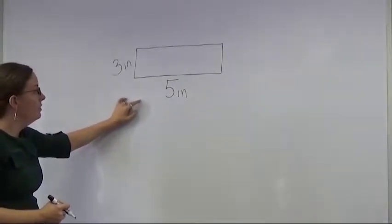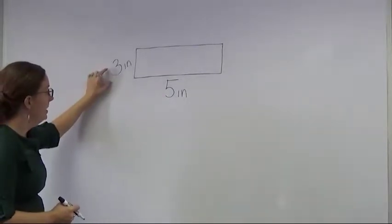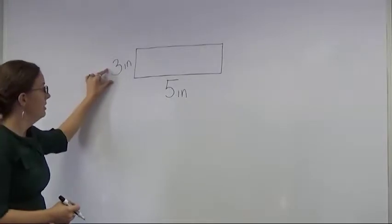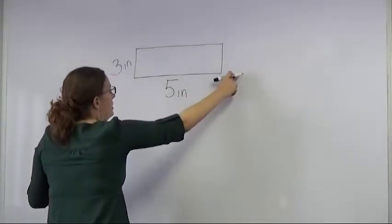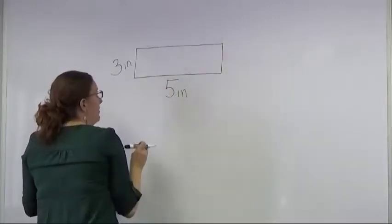Knowing that a rectangle has two sides of equal length that are opposite each other, that means if this side over here is three inches, then this side over here is also three inches. If the length here is five inches, that means this side is also five inches.